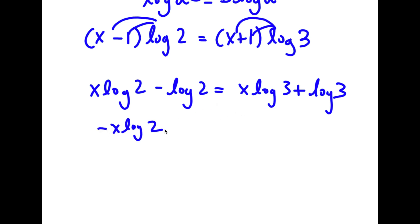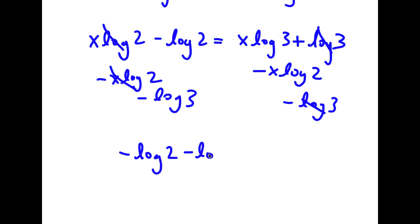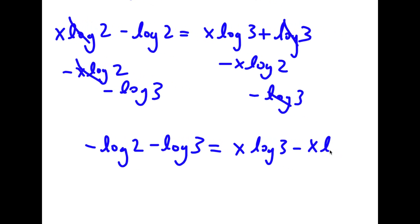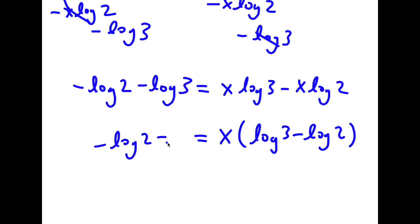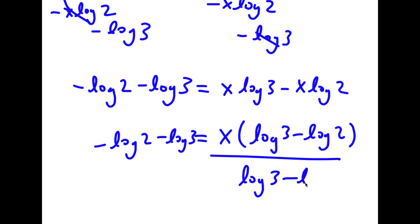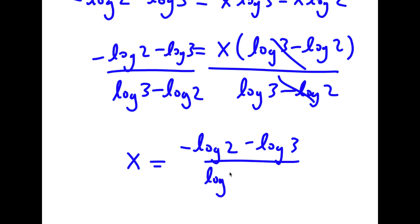I'm going to subtract x times log 3 on both sides and subtract log 2 on both sides. These terms cancel out, and I have negative log 2 minus log 3 is equal to x times log 3 minus x times log 2. Factoring out x, I get x times log 3 minus log 2 is equal to negative log 2 minus log 3. Dividing both sides by log 3 minus log 2, I have x is equal to negative log 2 minus log 3 over log 3 minus log 2.